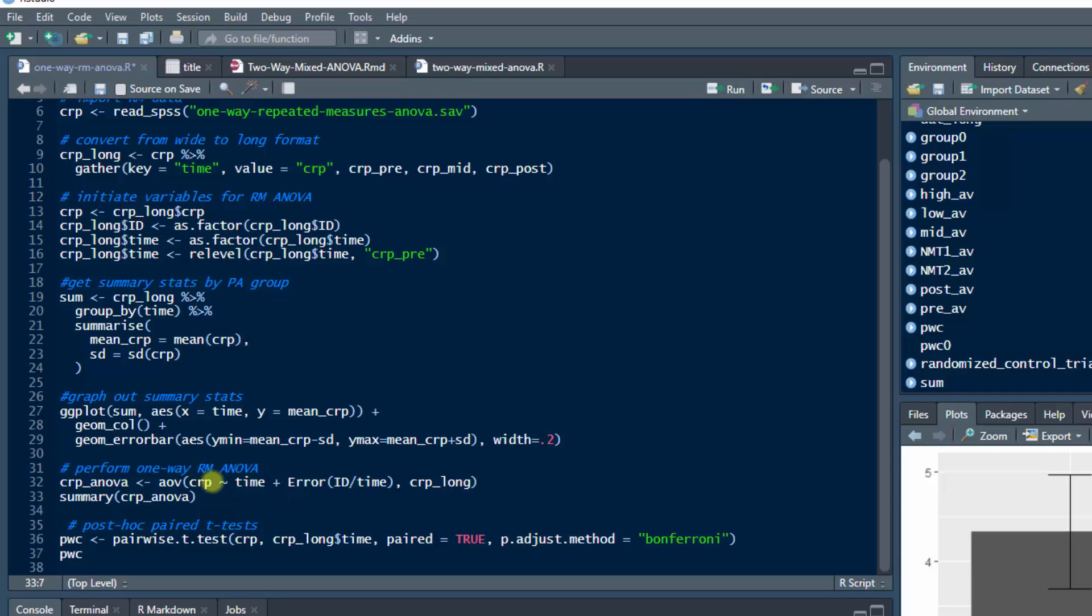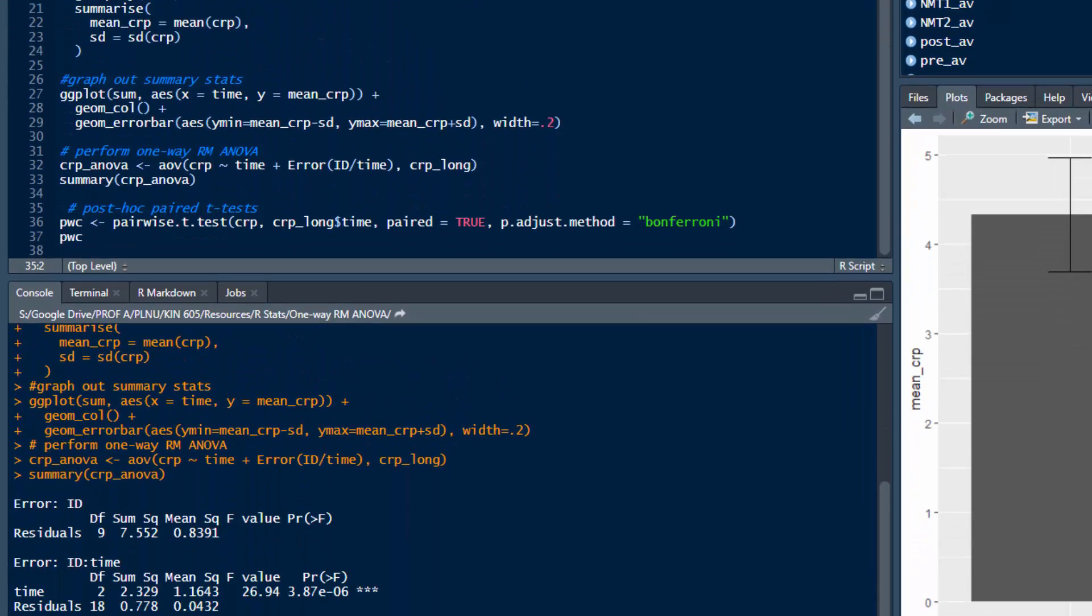That means that the dependent variable CRP is dependent on time, that's pre, mid, and post, as well as the random noise, the error, that's inherent in the subject themselves. And this is the code for that. This data is found in the dataset CRP_long. So we'll go ahead and run that. We click on Summary, and that will provide the ANOVA results.